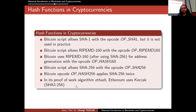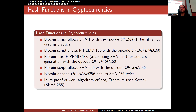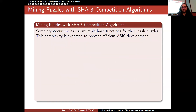Ethereum is somewhat different in its proof-of-work algorithm, ETHash — Ethereum uses Keccak. Keccak is actually the winner of the SHA-3 competition, so for most purposes Keccak and SHA-3 are the same. However, Ethereum chose to use Keccak before the NIST documentation was finalized, so the SHA-3 in the NIST documentation is not exactly the same as the Keccak Ethereum uses — the padding is slightly different. This is why we sometimes say Keccak instead of SHA-3.